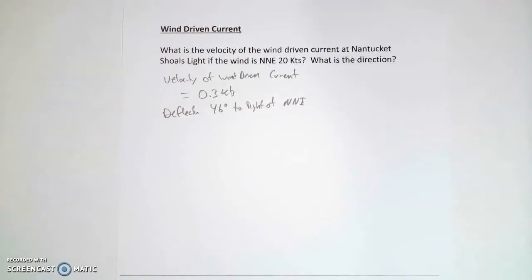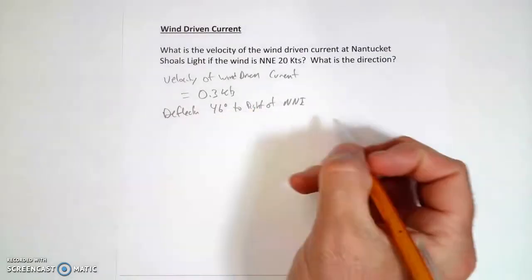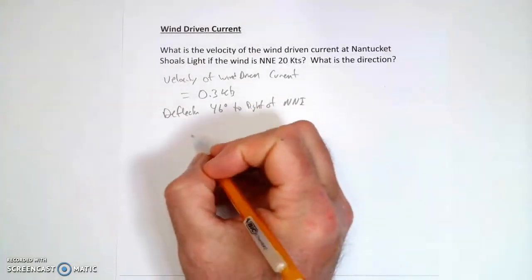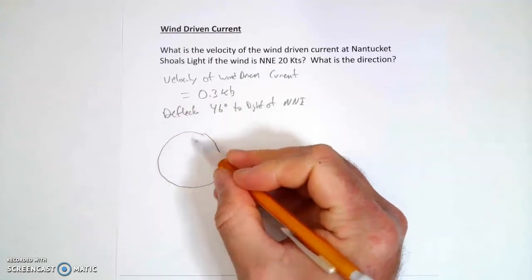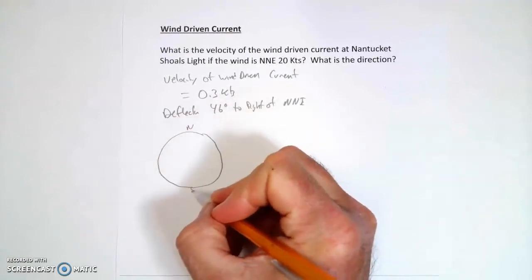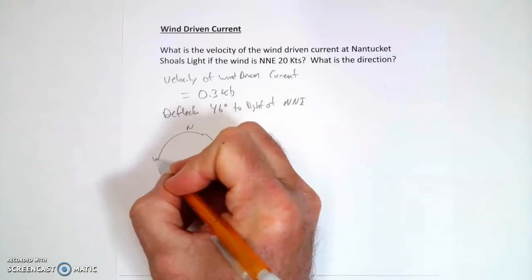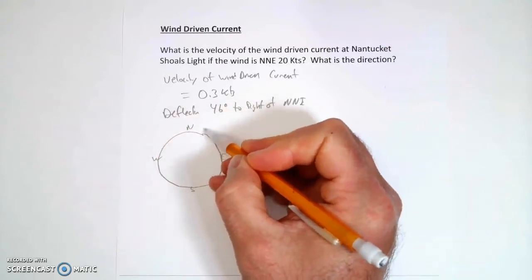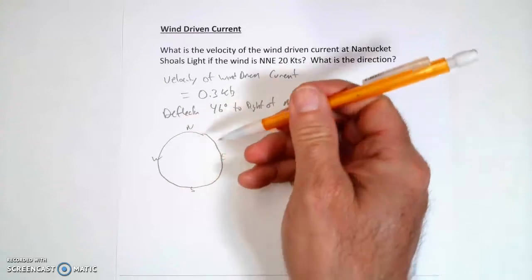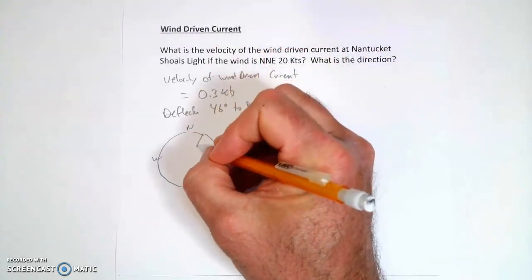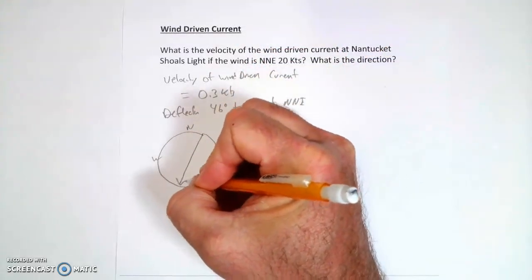So what I got to do now is, you know, if we think about this, so here we go, I'm going to draw a little circle, and that just sort of represents north. North, south, east, west. North-northeast is somewhere over in here, and the wind is blowing out of the north-northeast, which means it's blowing in that direction.